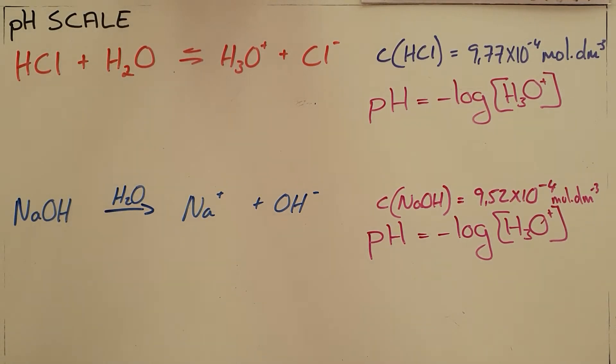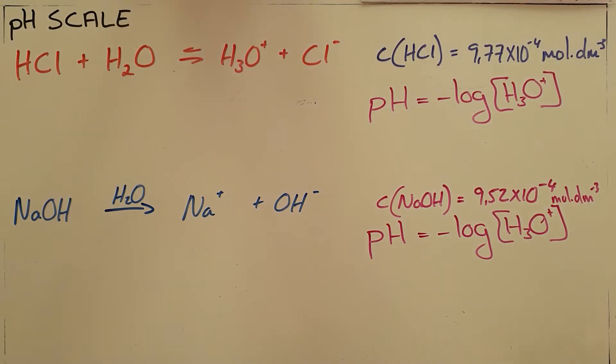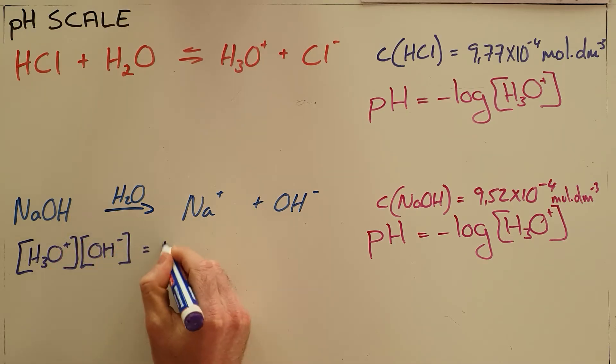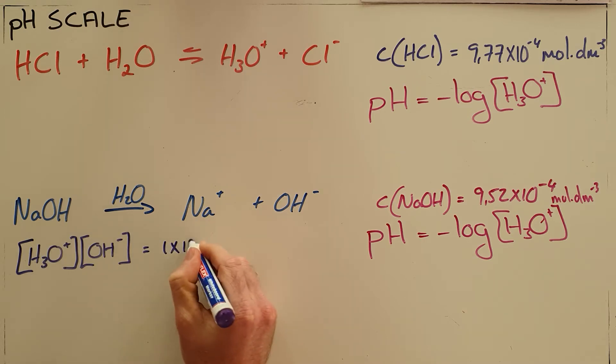We know that the pH scale is our way of indicating how acidic or basic a substance is. Essentially, what that does is measure the concentration of hydronium ions present in a solution. The reason why hydronium ions work even for acids and bases is because we know from our ionic product of water that the hydronium ions are inversely proportional to the concentration of hydroxide ions in that solution.